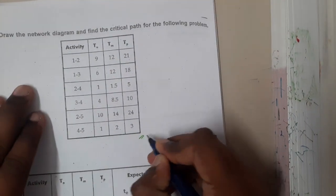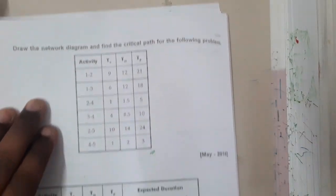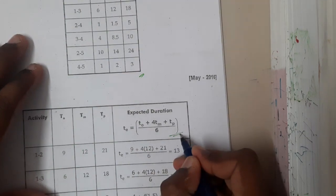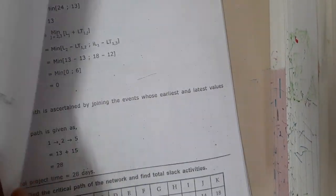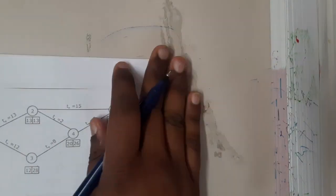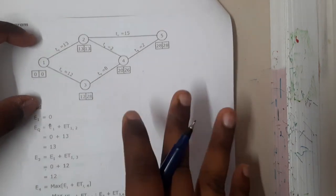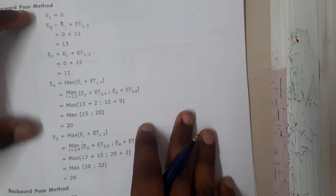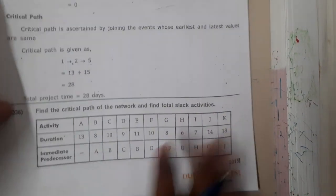The next problem involves optimistic time, pessimistic time, and the PERT formula, which we already discussed. You should remember the formula, fill the table, calculate the mean values, and then apply the same critical path method — the same forward and backward tracking works here as well.